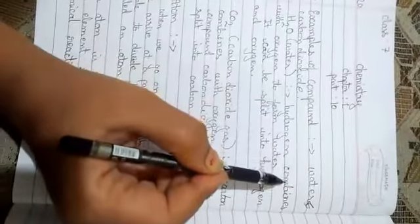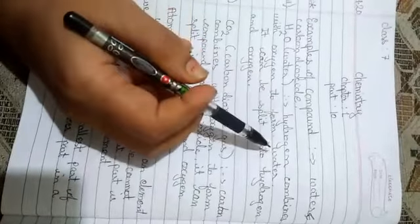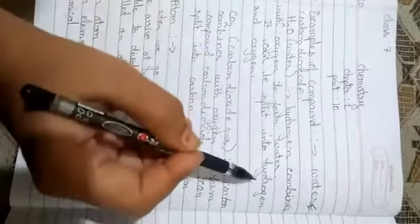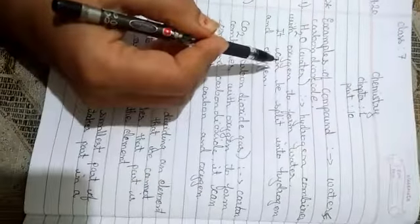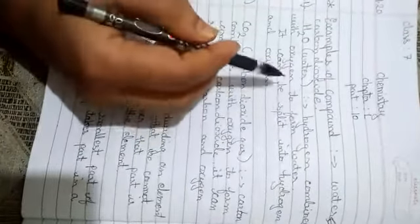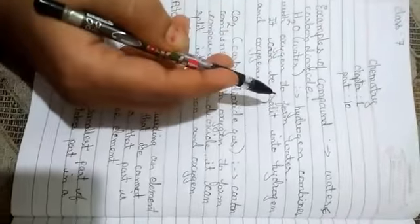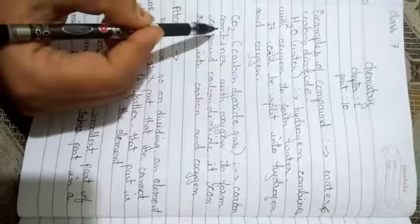Hydrogen combines with oxygen to form water. It can be split into hydrogen and oxygen. It means these constituents can be separated. Which are the constituents? Hydrogen and oxygen. They can be separated again into hydrogen and oxygen as it is a compound.